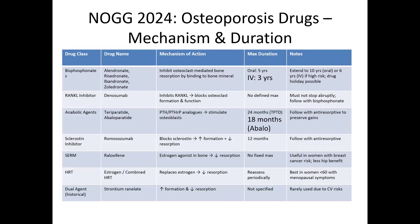Treatment can be extended up to ten years for oral and up to six years for IV bisphosphonates in high-risk category patients. We also need to consider the drug holiday aspect. All these details are covered in my detailed 90-minute session on osteoporosis. The second class of drugs is the RANK inhibitor, which is denosumab — this inhibits RANKL and blocks osteoclast formation and function.